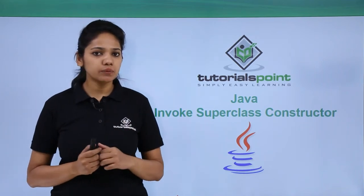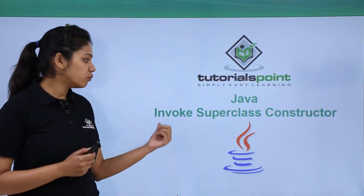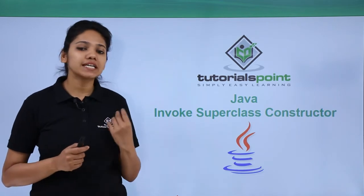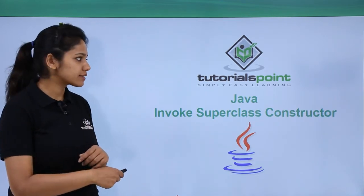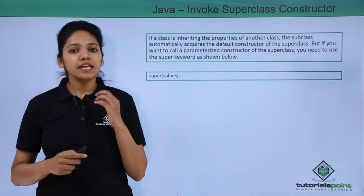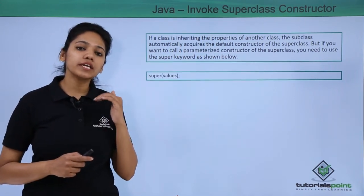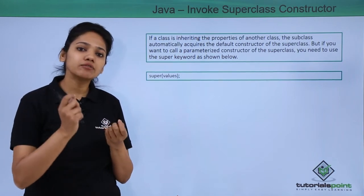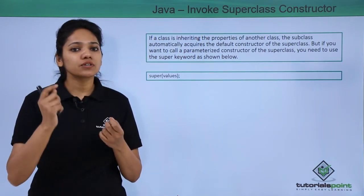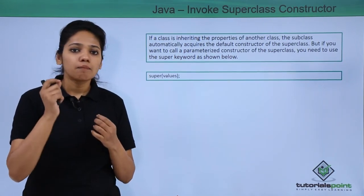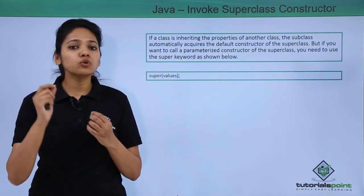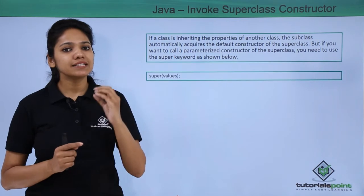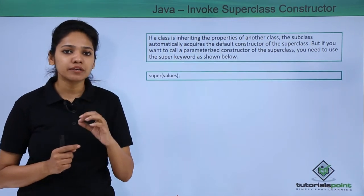The third use of the super keyword is to invoke the superclass constructor. If you are trying to invoke the constructor of your child class, it will by default call the default constructor of your parent class. But if you want to call the parameterized constructor of your parent class, then you need to use the super keyword.